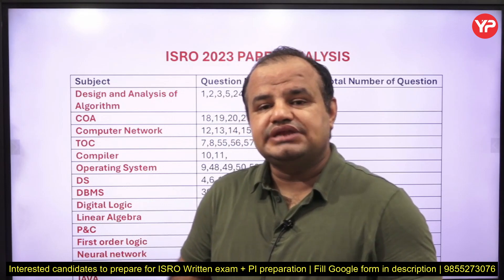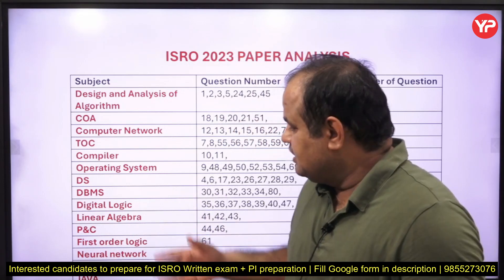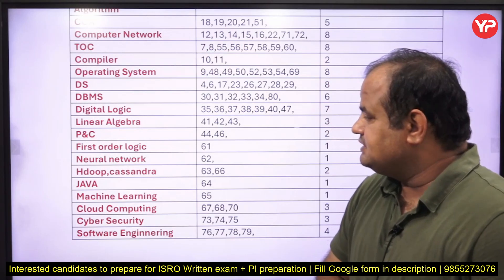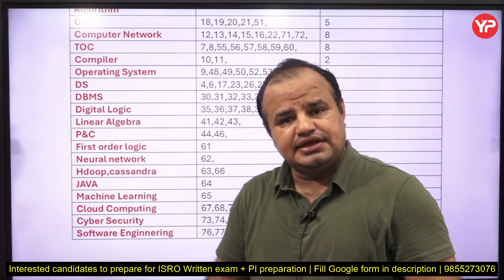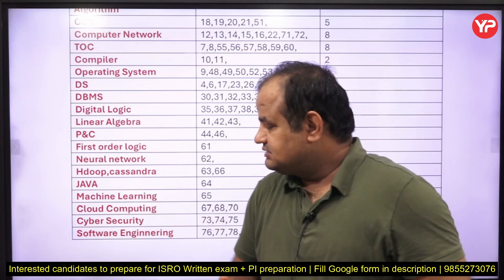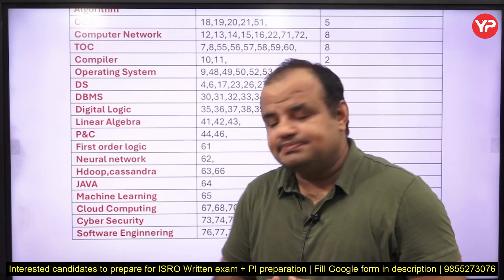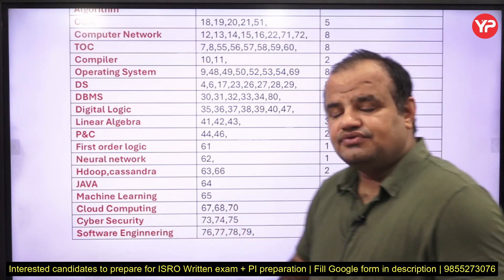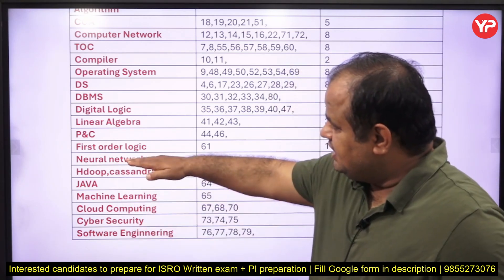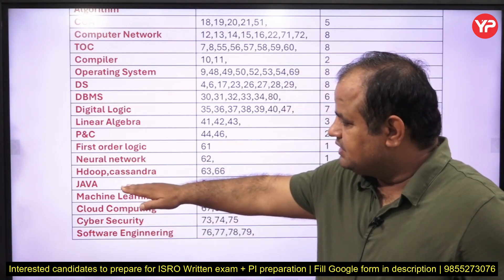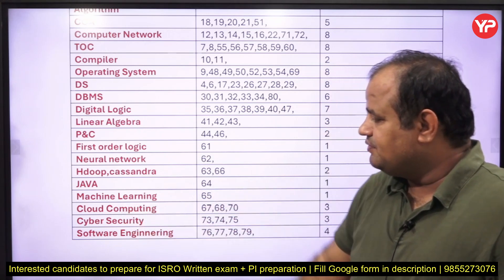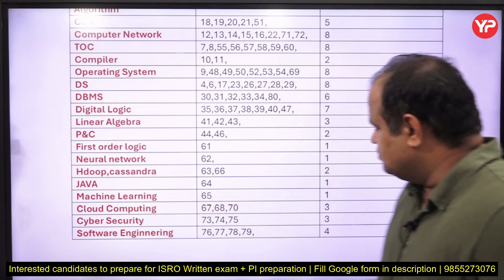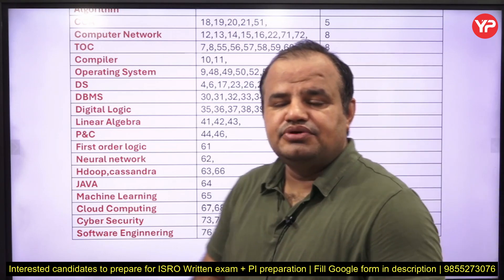From last year onwards, they have added some advanced topics. They ask one question from Hadoop, Cassandra, and Java is also included this time. They don't ask that many questions from the OOPs part, but machine learning, cloud computing — they ask three questions — cyber security, and software engineering are included. Areas like neural network, Hadoop, Cassandra, Java, machine learning, cloud computing, cyber security and software engineering account for almost 15 questions.